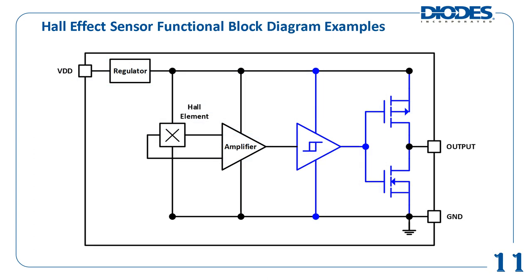A simplified example functional block diagram of a Hall Effect switch with a push-pull output is shown. A magnetic field will vary the Hall voltage generated from the Hall element. Since the Hall voltage generated is usually on the order of microvolts, it needs to be amplified. The amplified signal then controls an output driver with hysteresis to drive the output FETs. The output is then driven to either a logic low or logic high state, depending on the detected magnetic field.